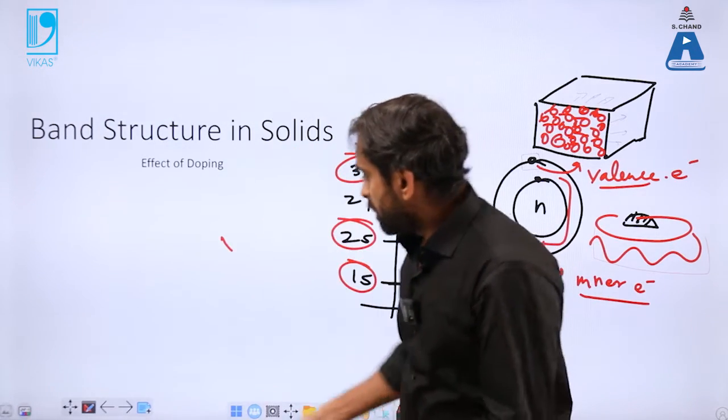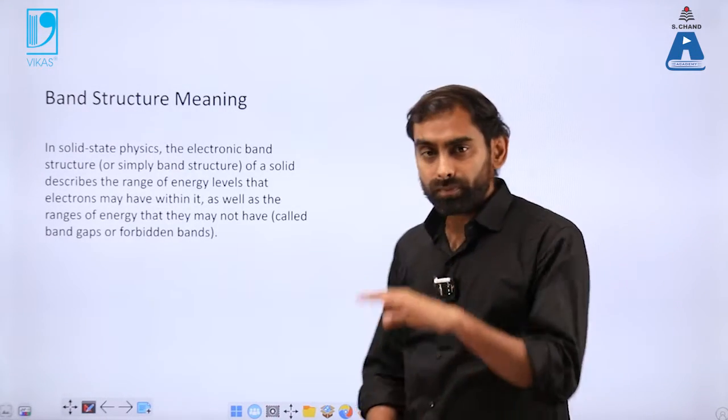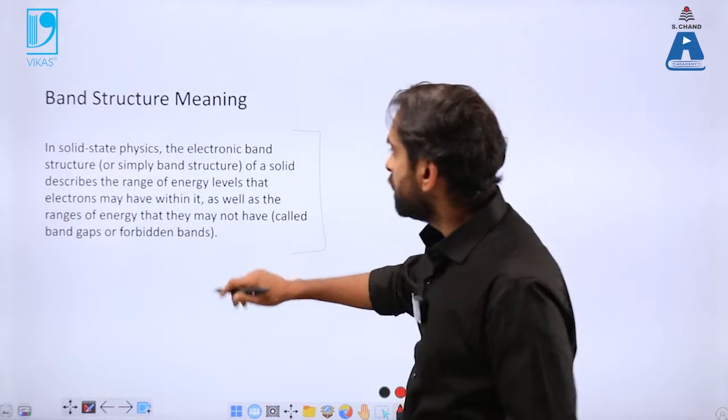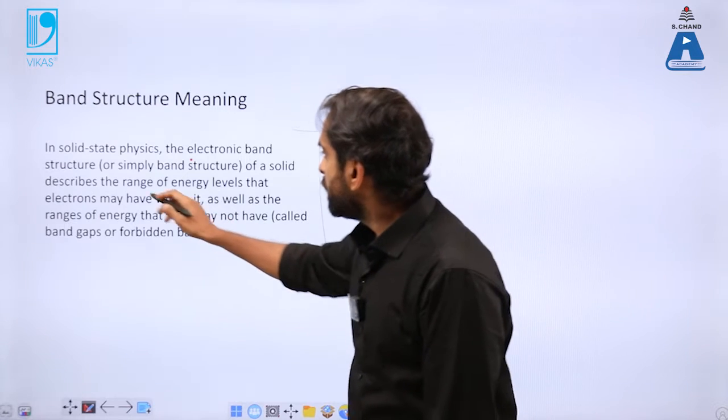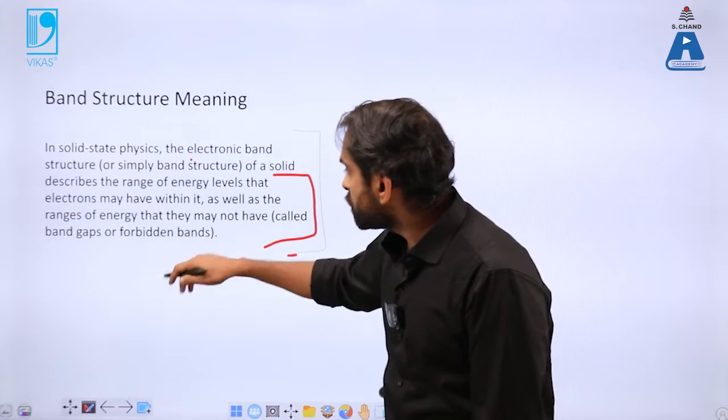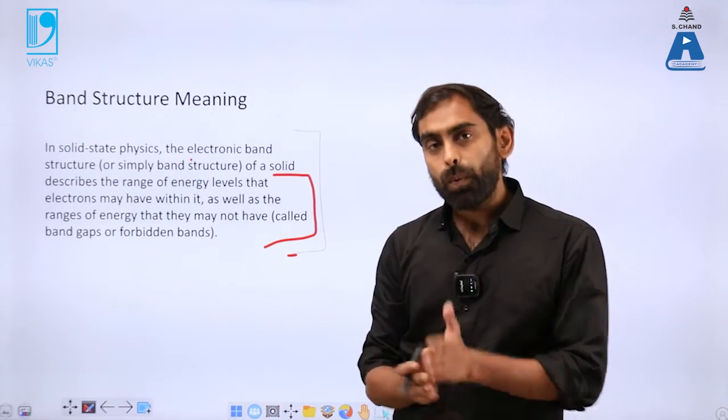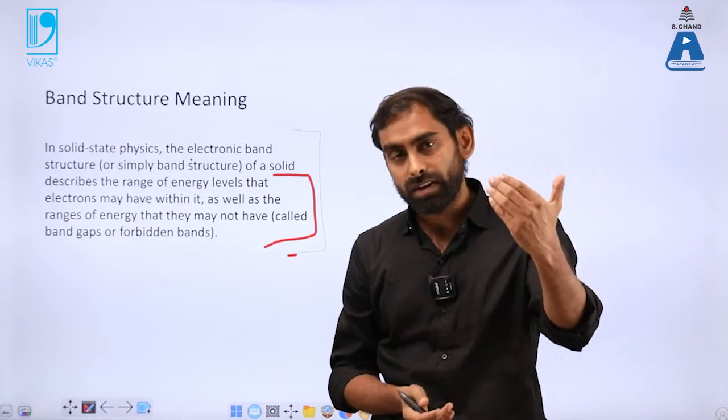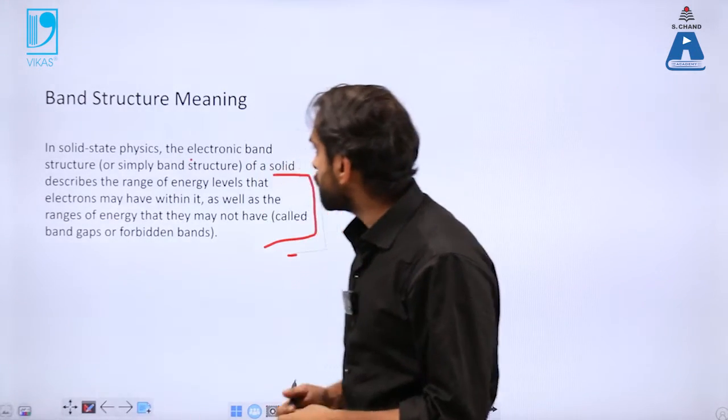These bands in solids are defined as energy levels or energy differences in the electrons. In solid state physics, the electronic band structure describes the range of energy levels that electrons may have within it, as well as ranges of energy they may not have. There can be possible energy levels present in matter and forbidden energy levels which are there but electrons have not reached.